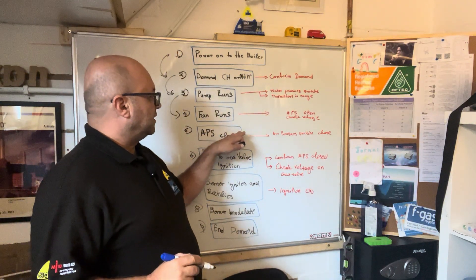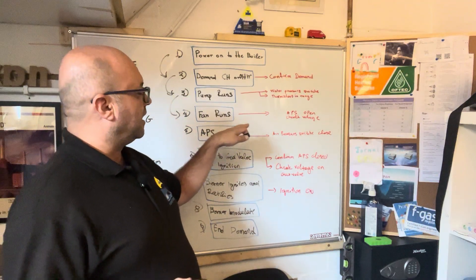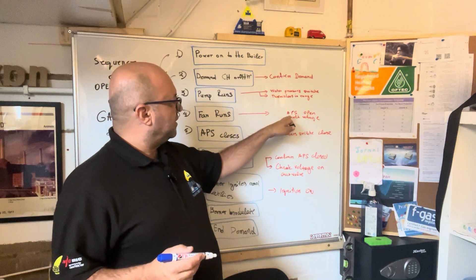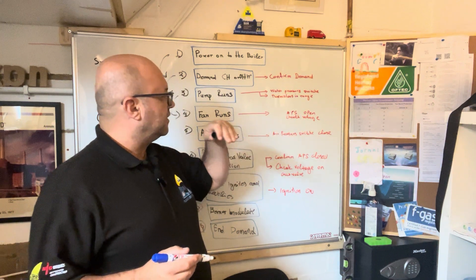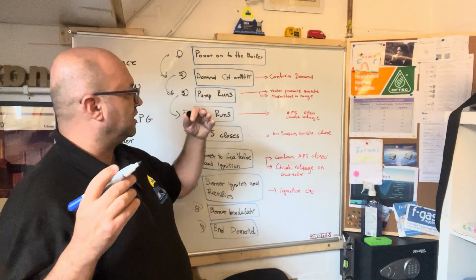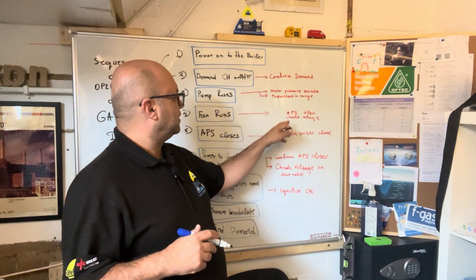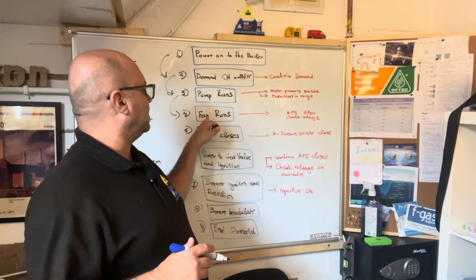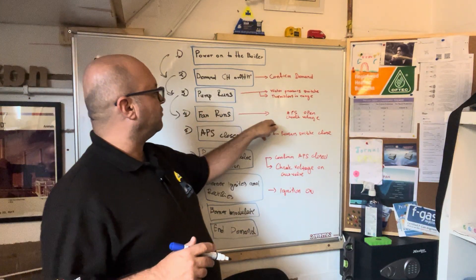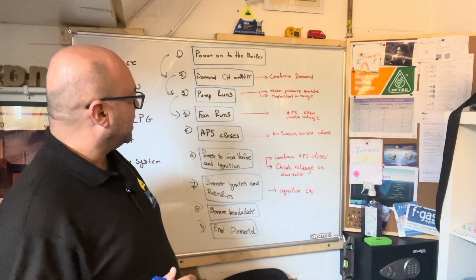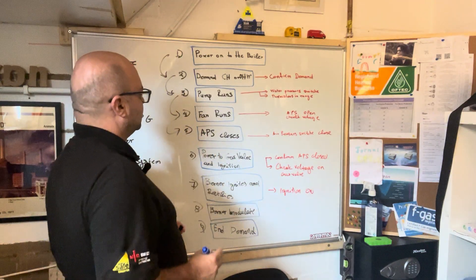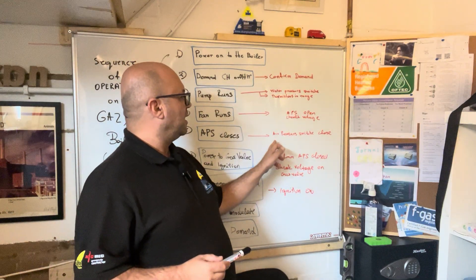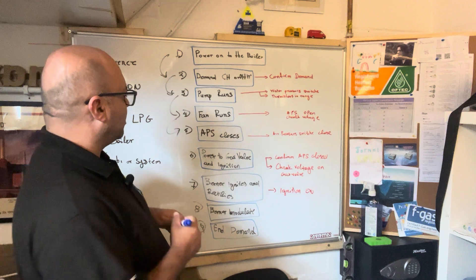Then the fan starts to run. When the fan starts, it runs for a few seconds to clean the burner chamber. The automatic air pressure switch (APS) initially opens and then moves to the closed position. We can check if the fan is running by measuring voltage on it. If the fan is not running at this step, we check whether voltage is being supplied to it. If everything is okay, we proceed — the APS closes.